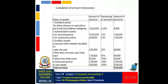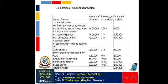Let us go to the solution part. Calculation of amount of provision — table with four columns: status of assets, amount of advance, percentage of provision, amount of provision. First, standard assets — on direct advance to agriculture and small and medium enterprise: amount of advance Rs. 16 lakh, percentage of provision 0.25%, amount of provision Rs. 4,000.